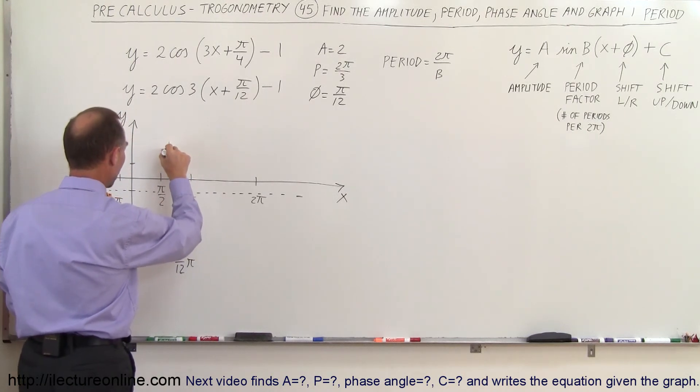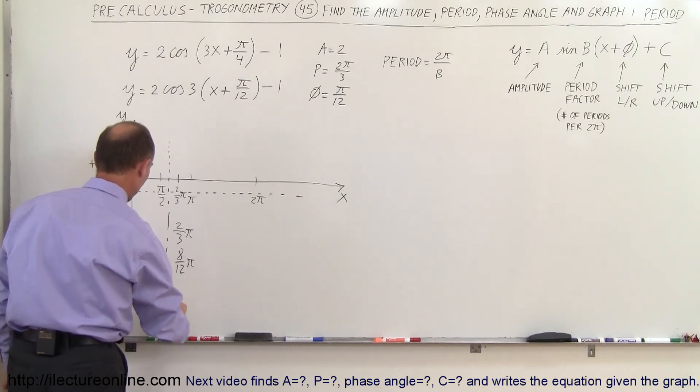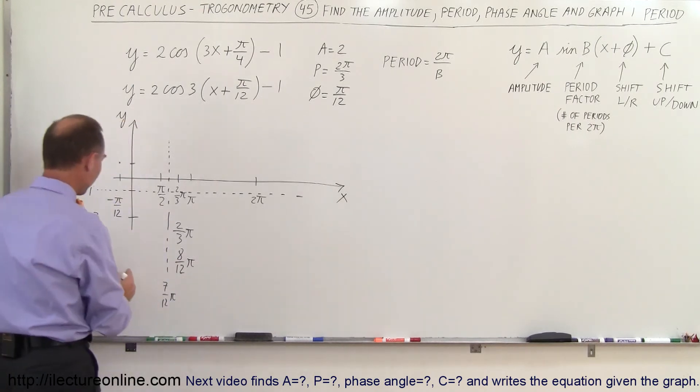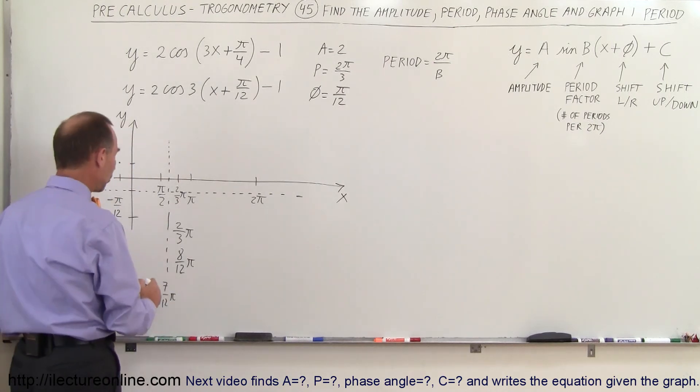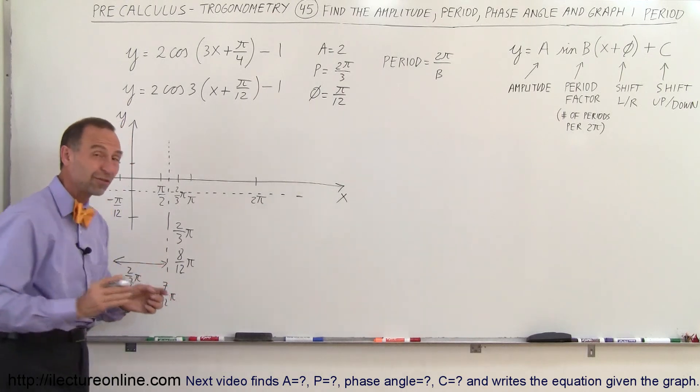So it would be right about here so this point here is 7 over 12 π and so going from minus π over 12 to 7 π over 12 that's a total period of 8 π over 12 or 2 thirds π. So this distance right here is 2 thirds π and that will then consist of the single periods for the function.